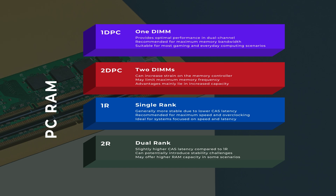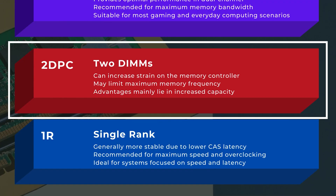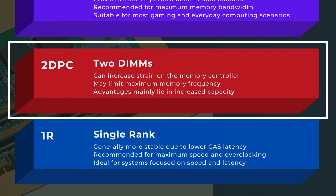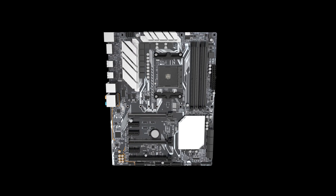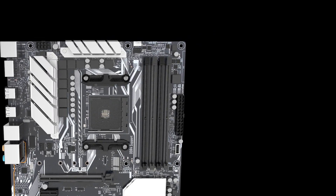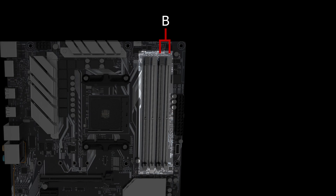Basically, there are four different terms you might come across: 1DPC, 2DPC, 1R, and 2R. Most PC gaming motherboards have four RAM slots and use dual channel architecture. The first two slots belong to channel A and the following two belong to channel B.